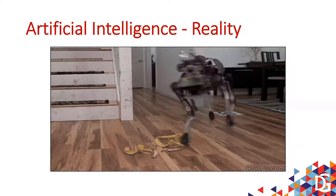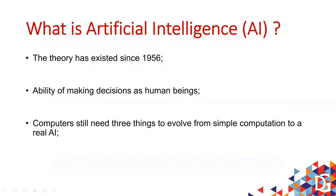Did you know that the idea of artificial intelligence — the theory — exists since 1950, 1956? This is like a mind explosion. It's not new. The idea of artificial intelligence is to build a mathematical model of how our brain works and put that on a machine. The idea is to help a machine make decisions like a human being.